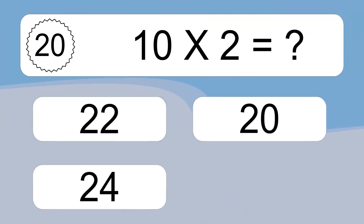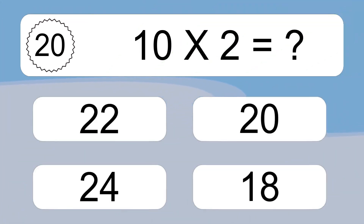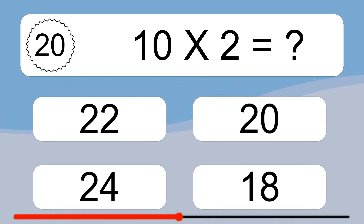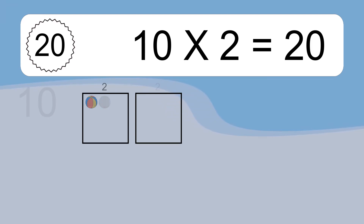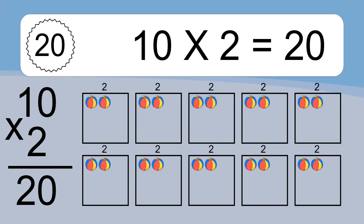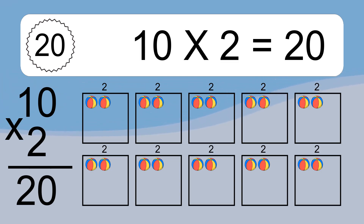10 times 2 equals what? 10 times 2 equals 20. We have 10 boxes, and each box has 2 colorful balls inside. If you count all the balls in all the boxes together, you will have 10 times 2 balls. This equals 20 balls.